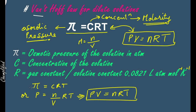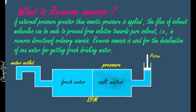π is just representing the pressure term; concentration gives you moles per liter; R and T remain the same — so this becomes your ideal gas equation. These equations are essentially the same. This is the equation you are going to use for solving numericals. Now comes the last topic of this video: what is reverse osmosis?